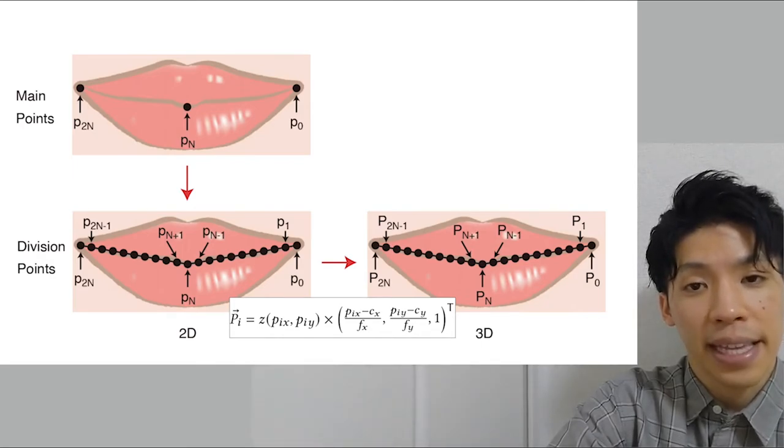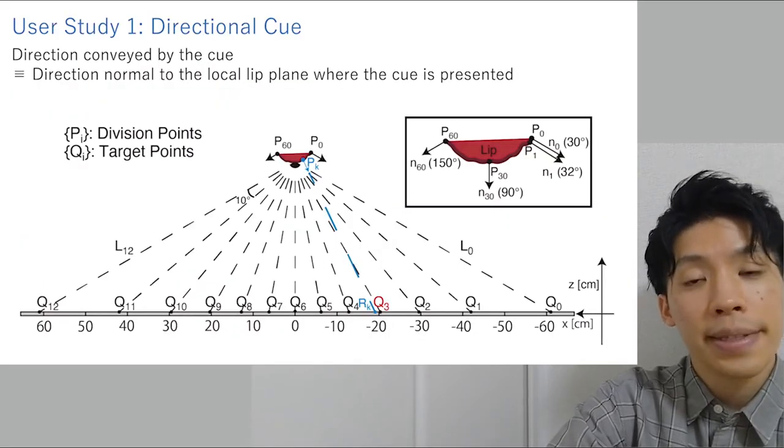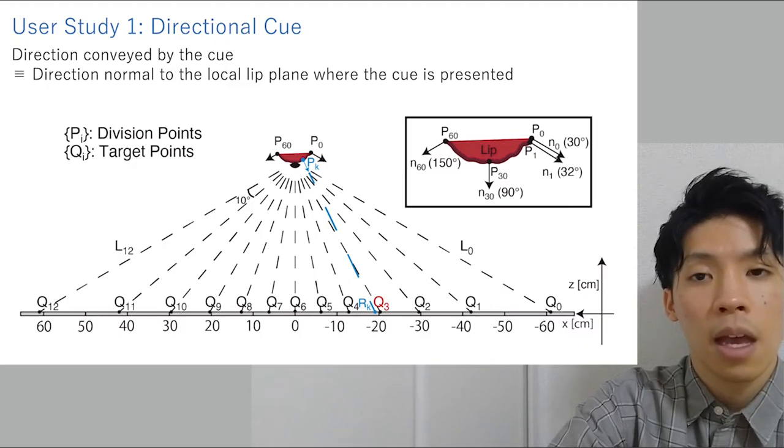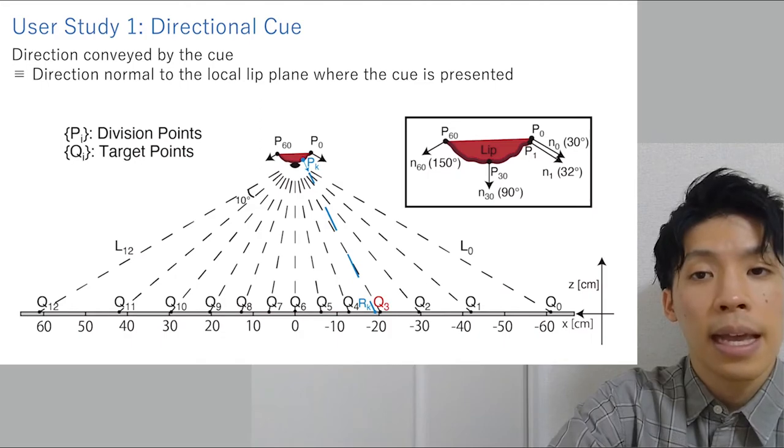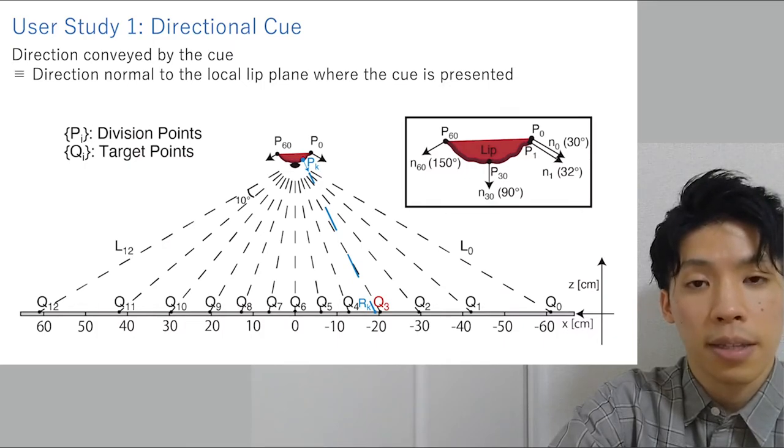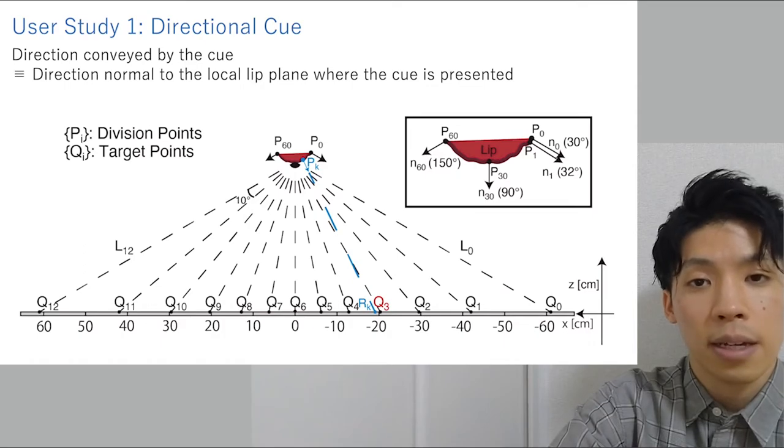In the first user study, we examined the feasibility of directional information notification with ultrasonic tactile cue presentation on the lips. We defined the direction conveyed by the cue as the direction normal to the local lip plane where the cue was presented. In each experimental trial, we chose a target point and stimulated a division point facing towards the target point. Participants looked in the direction they thought was conveyed by the cue and selected a target point in the center of their vision.